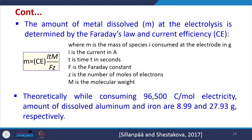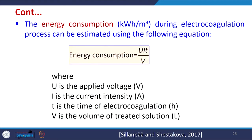The amount of metal dissolved during electrolysis can be determined by Faraday's law and current efficiency. The relationship is: metal dissolved = (C × I × T × M) / (F × Z), where C is current efficiency, I is current, T is time, F is Faraday's constant, Z is the number of moles of electrons (depending on whether we use aluminium or iron), and M is the molecular weight. Theoretically, while consuming a certain number of coulombs per mole, the amount of aluminium or iron dissolved should be calculable, and by manipulating these parameters we can slowly release coagulant as desired. Energy consumption can also be calculated — typically expressed as kilowatt-hours per cubic metre.